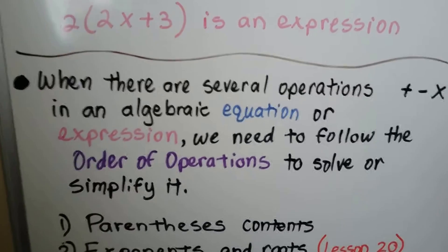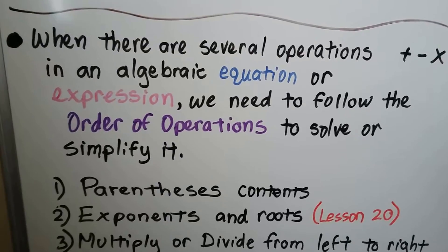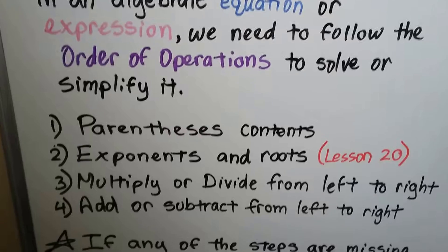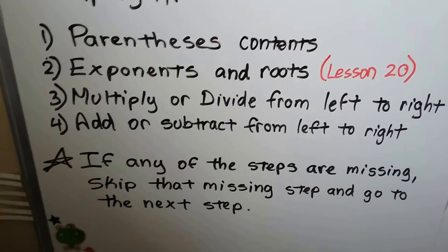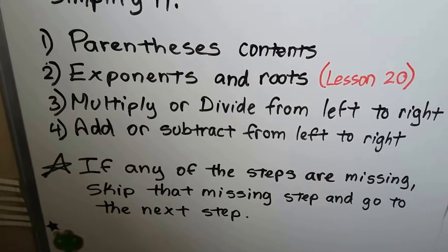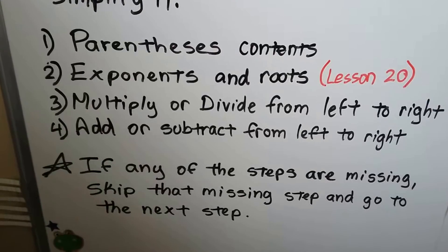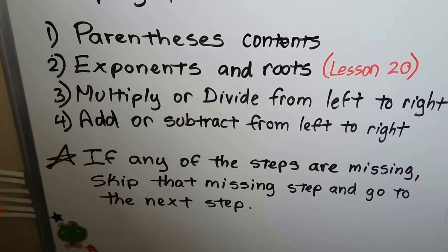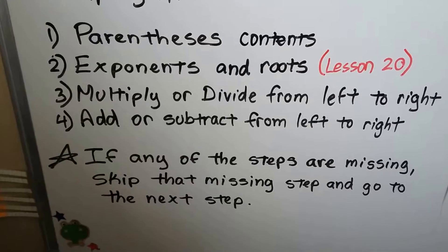When there are several operations — like addition, subtraction, multiplication, or division — in an algebraic equation or expression, we need to follow the order of operations to solve or simplify it. We do the contents of parentheses or brackets first, then any exponents and roots, then multiply or divide from left to right whichever comes first, then add or subtract from left to right whichever comes first. If any steps are missing, we skip that step and go to the next.